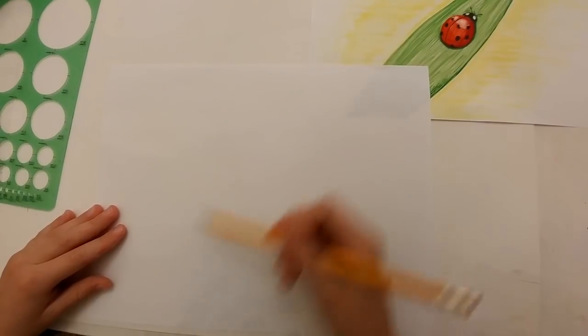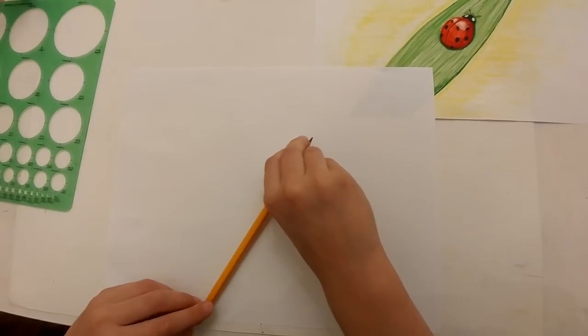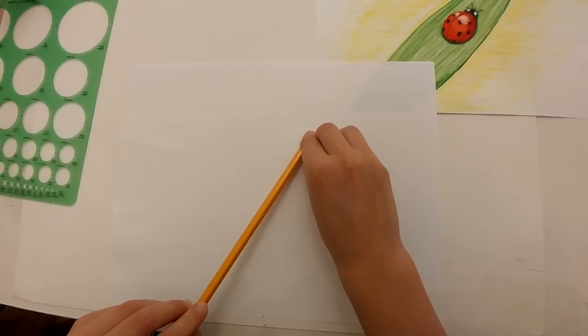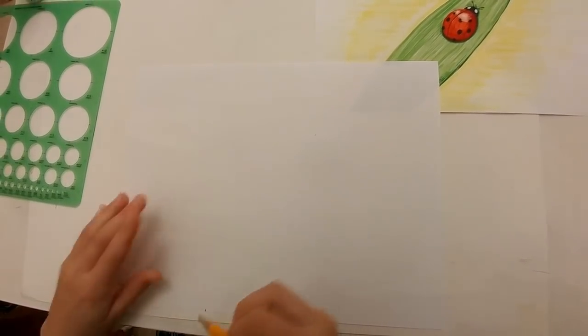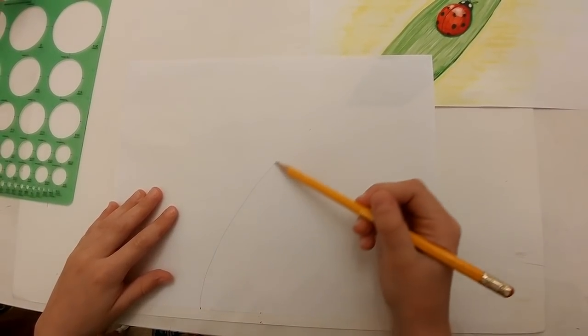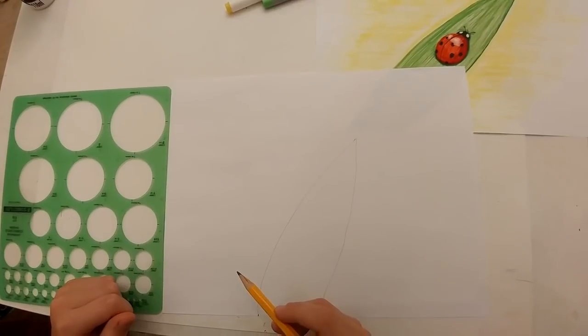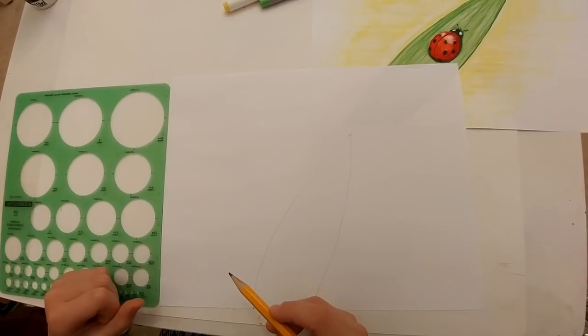First, let's draw our leaf for the ladybug. Put two dots on the bottom, measure the pencil, and put a dot. Connect the three dots with two arching lines. Our leaf is done.